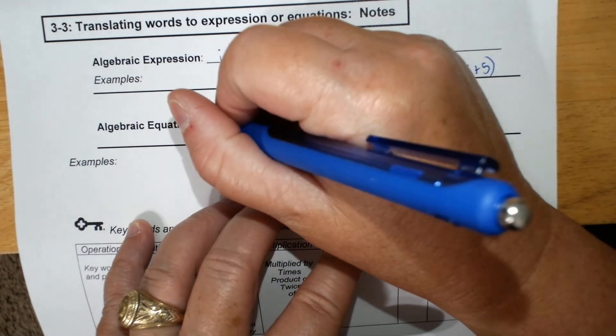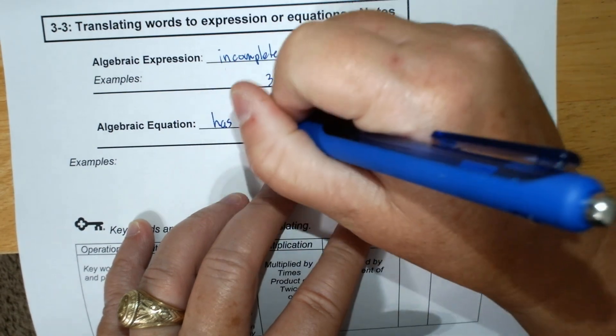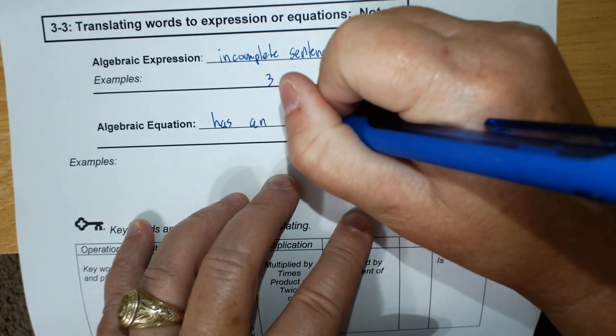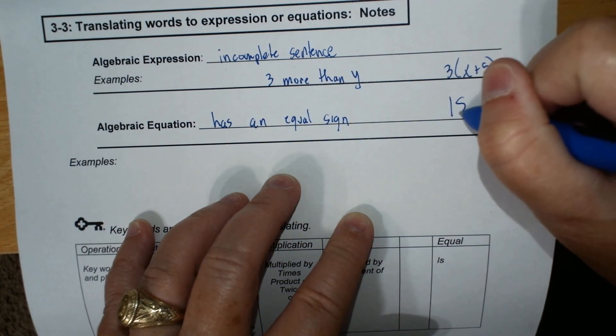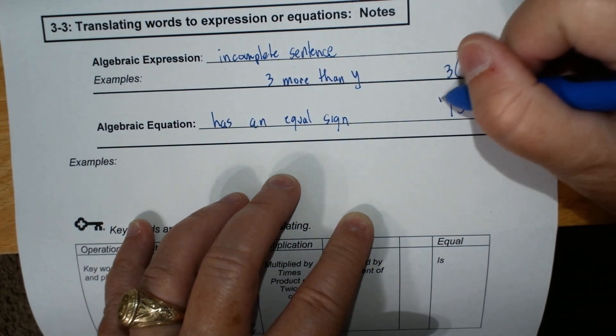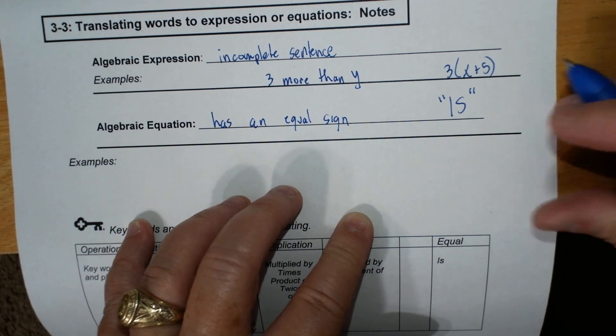Now, an equation has an equal sign. So you're going to look for is most of the time. Usually they'll have other words.